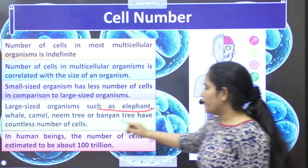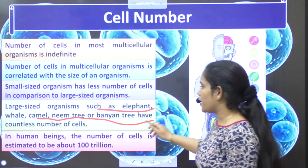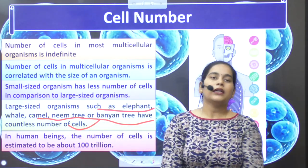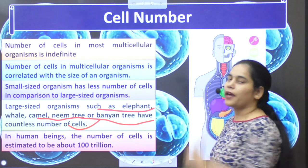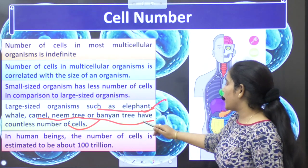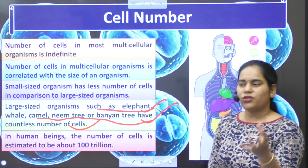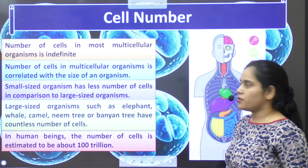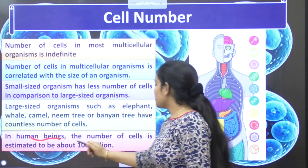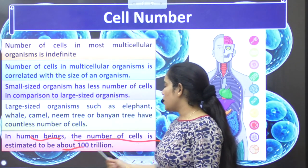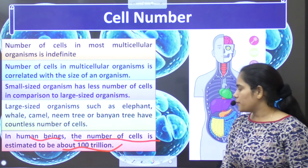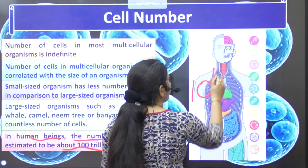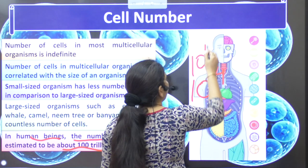Large size organisms such as elephants, whales, camels, neem trees, or banyan trees have a countless number of cells — so many cells that we don't even know how many they carry. It is a little bit difficult, not impossible, but difficult. In a human being, the number of cells is estimated to be about 100 trillion — that is, 10 to the power 14. There are so many cells.